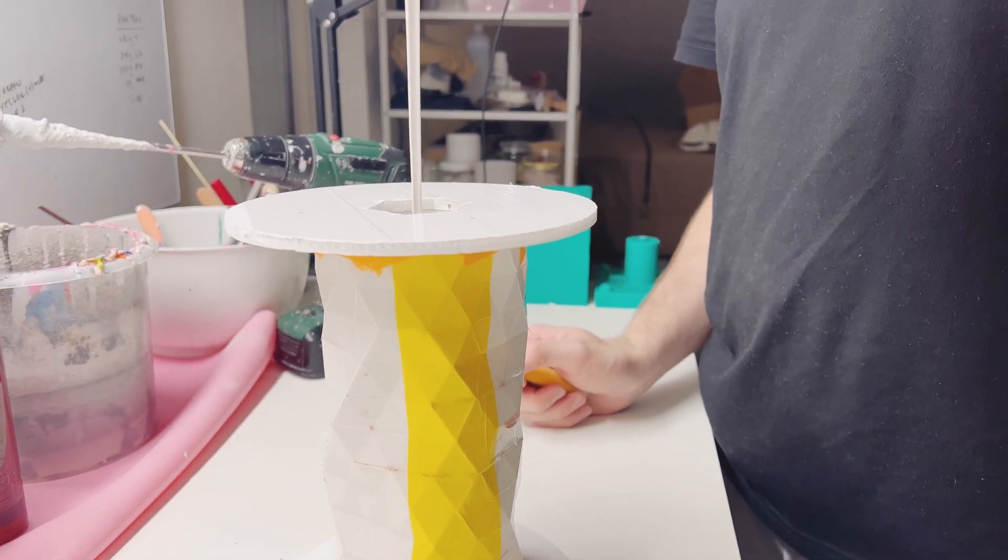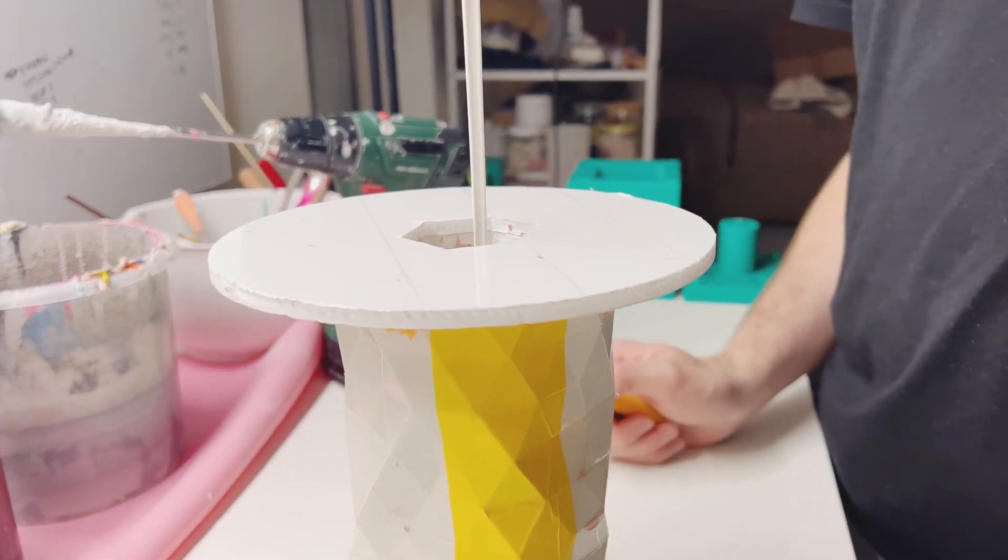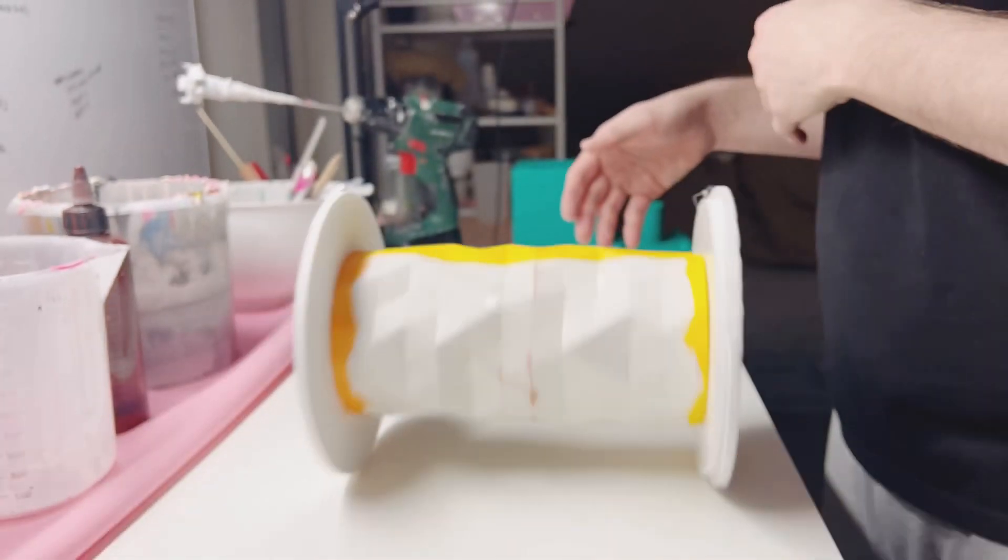Now we are repeating the same process again, because if we would only do it once, the walls would be super thin. So pouring and rolling for another five to ten minutes.